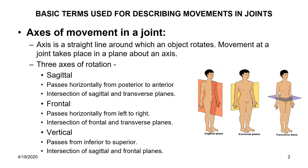There are three axes of rotation: the sagittal, the frontal, and the vertical. For the sagittal axis, it passes horizontally from posterior to anterior and is at the intersection of sagittal and transverse planes. The frontal axis passes horizontally from left to right side and is at the intersection of frontal and transverse planes.